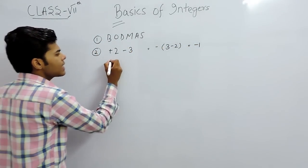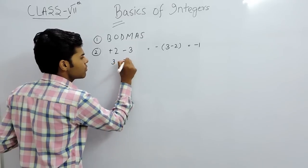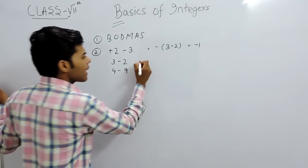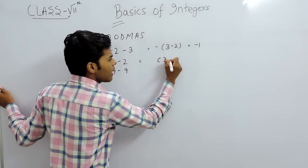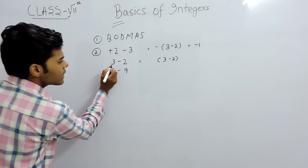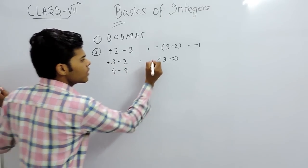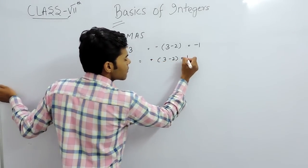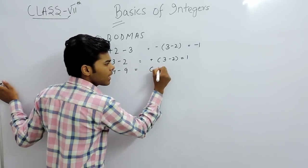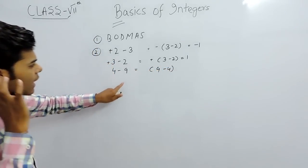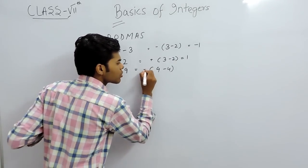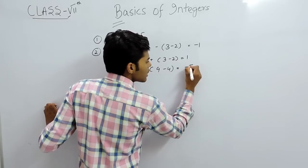Let's take more examples: 3 minus 2, and 4 minus 9. For 3 minus 2, we subtract to get 1, and the greatest number is 3 with a positive sign, so the answer is plus 1. For 4 minus 9, we do 9 minus 4, and the greatest number is 9 with a negative sign, so the answer is minus 5.